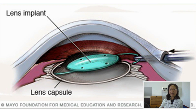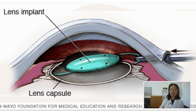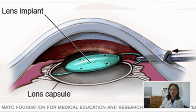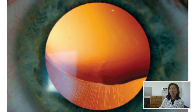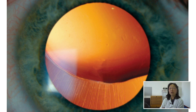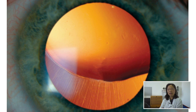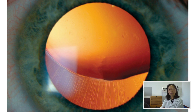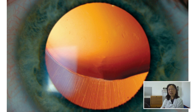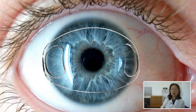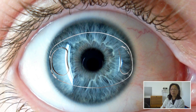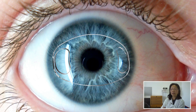In the intact capsule bag, an intraocular lens is implanted. In Marfan syndrome, the whole lens is dislocated. After total removal, there is no bag to place a traditional IOL. An anterior chamber iris-claw IOL can be placed in front of the iris.